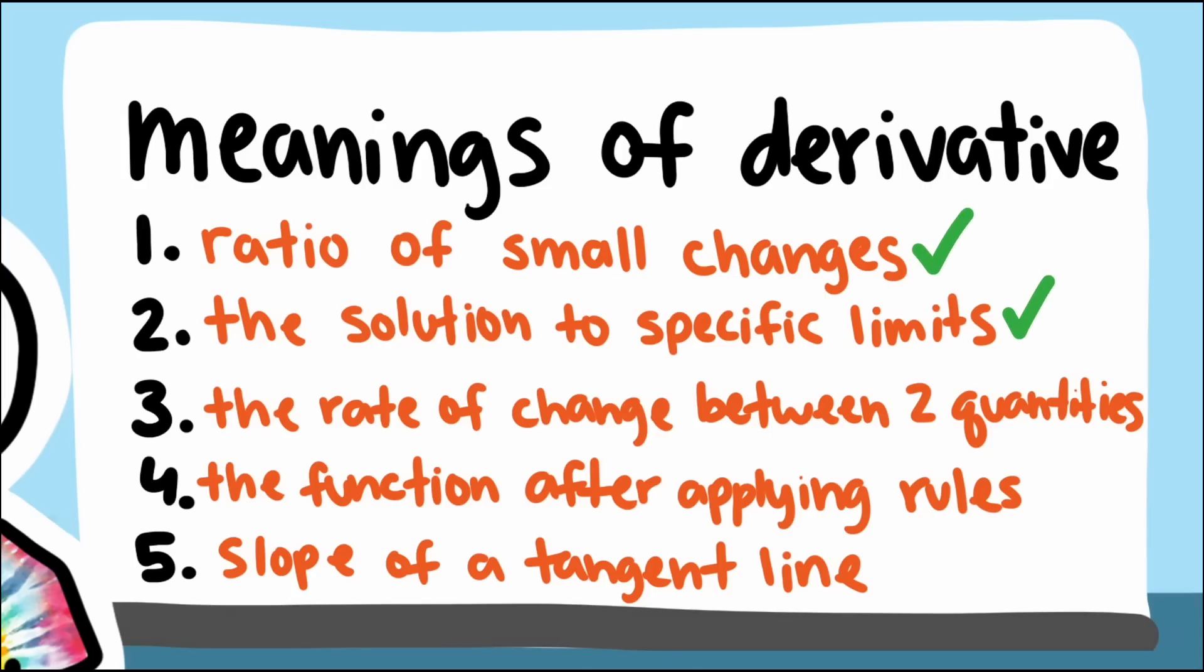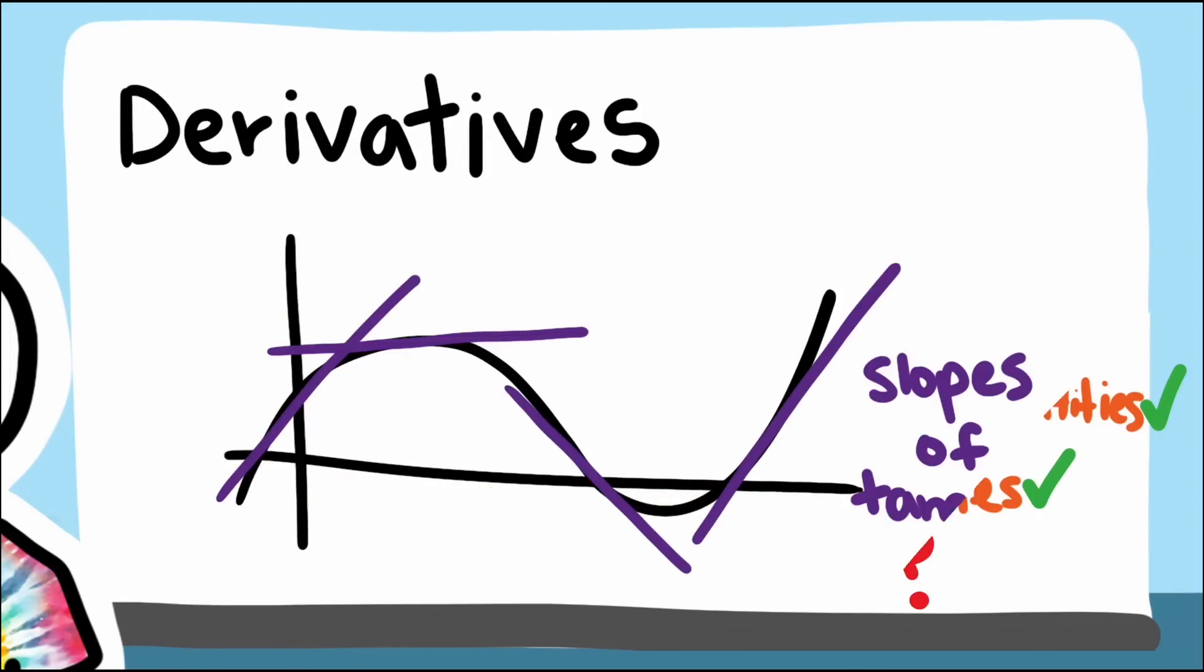The derivative rule's conception is good for calculation, but not so good for recognizing or interpreting derivatives. In this example, we've touched on all but one of the conceptions for derivatives. Number five, the slope of a tangent line. It doesn't seem connected to our question at all.